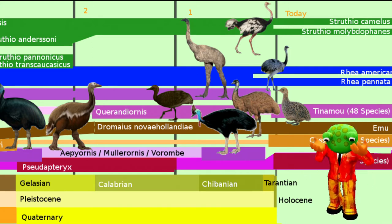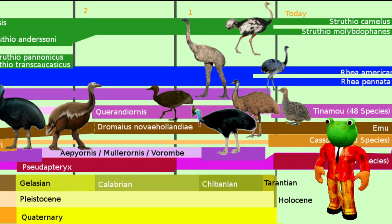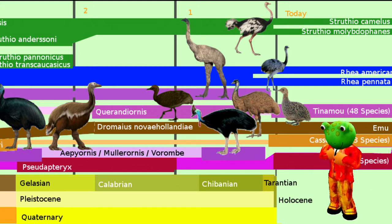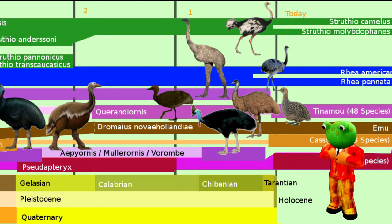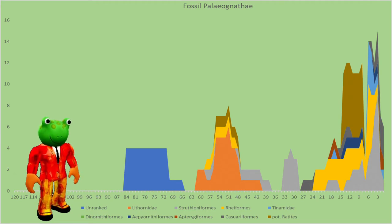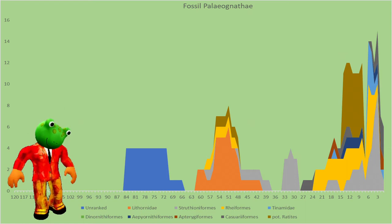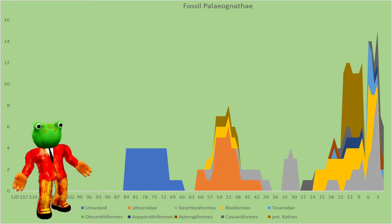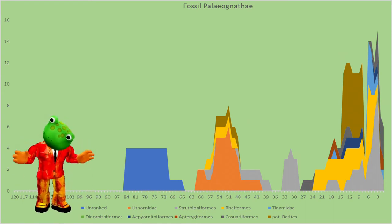Today live two species of Ostrich and Rhea, one species of Emu, three species of Cassowary, five species of Kiwi, and 48 species of Tinamu. When we look at the variety over a long period we can recognize two waves: the first in the Paleocene and Eocene, the second in the Miocene. It seems that the peak has been reached between 5 and 3 million years ago, in the great time of the ostriches.